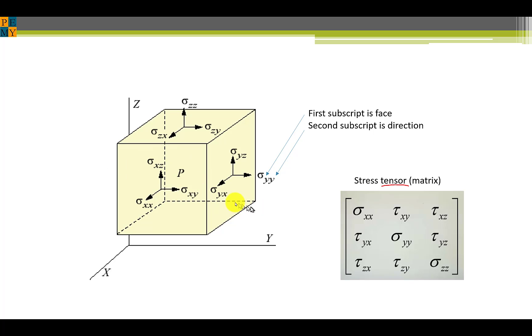Here we show two subscripts for each of the nine stress components. While the two subscripts are the same, such as sigma xx or sigma yy, that represents the normal stress. And we can write sigma yy as simply sigma y, sigma x here, and sigma z for the normal stresses.